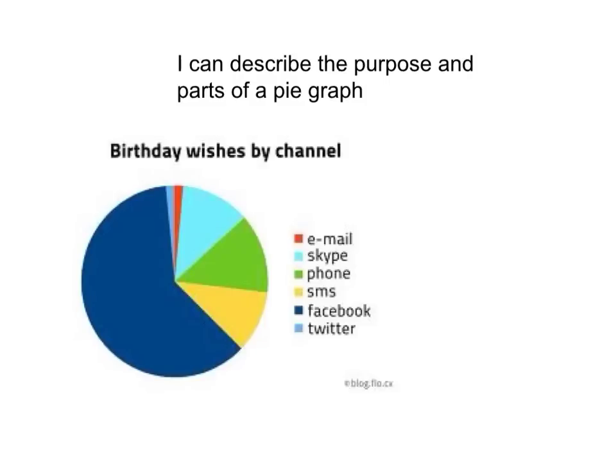This is a screencast on how to describe the purpose and parts of a pie graph. A pie graph is one that looks like a pie in the sense that it's a circle. The best thing about a pie graph is it's really good for displaying data that's a percentage, or when you want to see how the different parts make up the whole. Whenever you see one of these round graphs, it will be a pie graph.